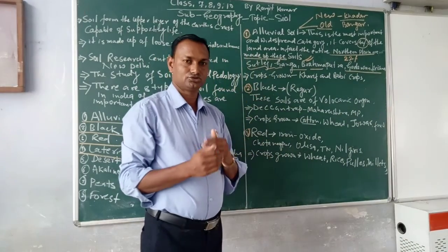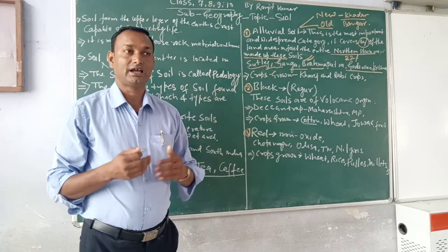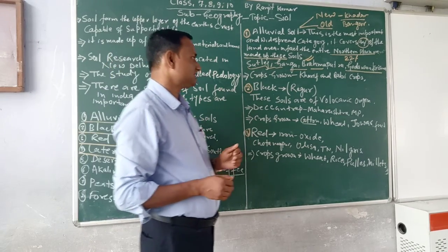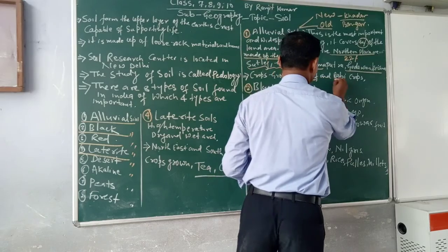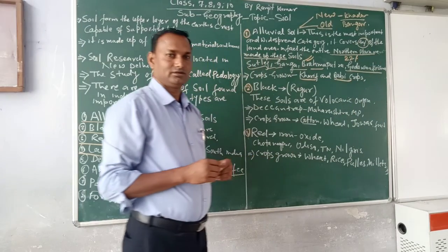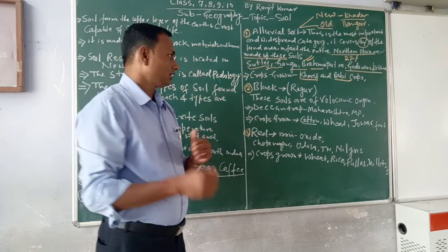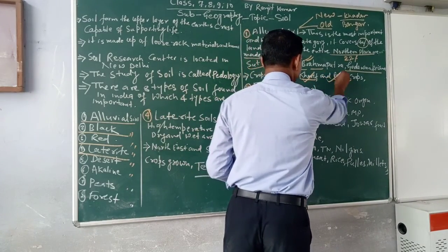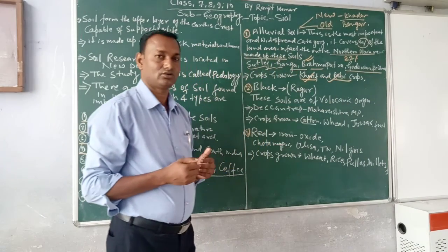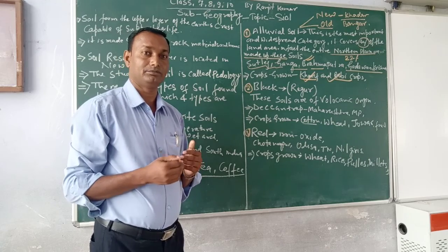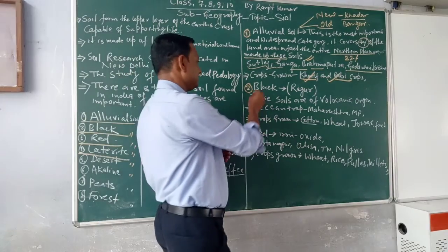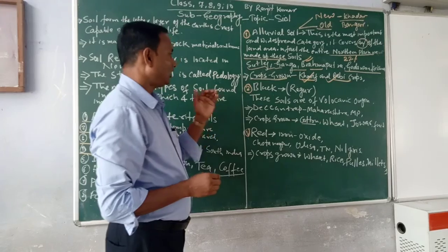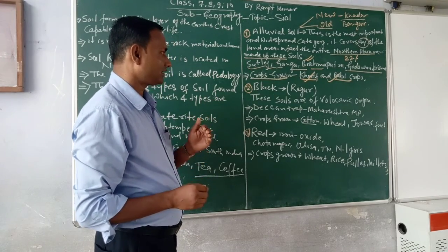Crops grown in Alluvial soil include Rabi and Kharif crops. Major crops include rice, wheat, and other agricultural produce. The main types of Alluvial soil are Bhangar, Khadar, and new Alluvial soil.